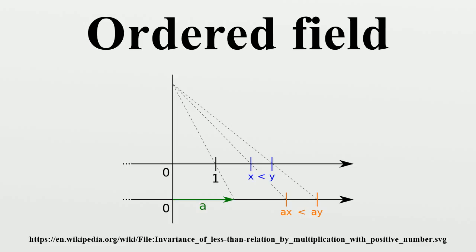Thus, an ordered field necessarily contains an infinite number of elements. A finite field cannot be ordered.